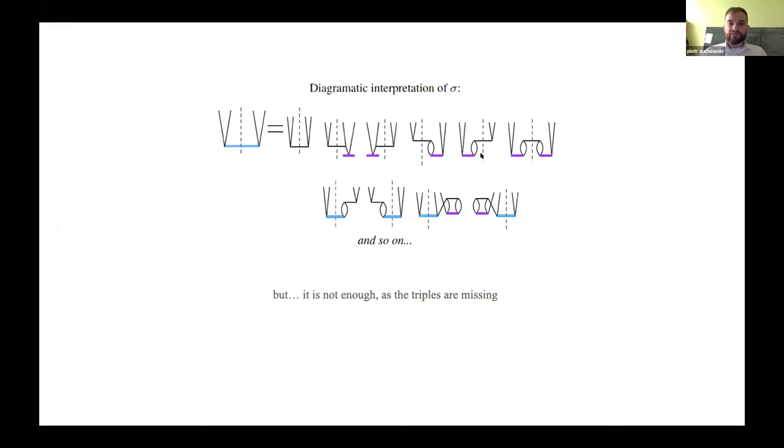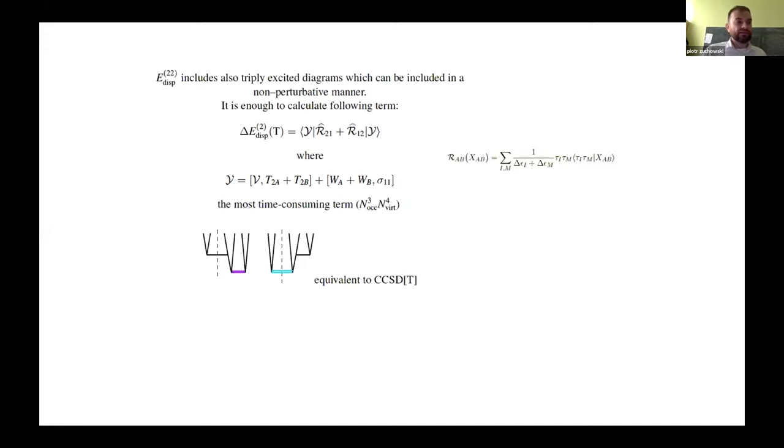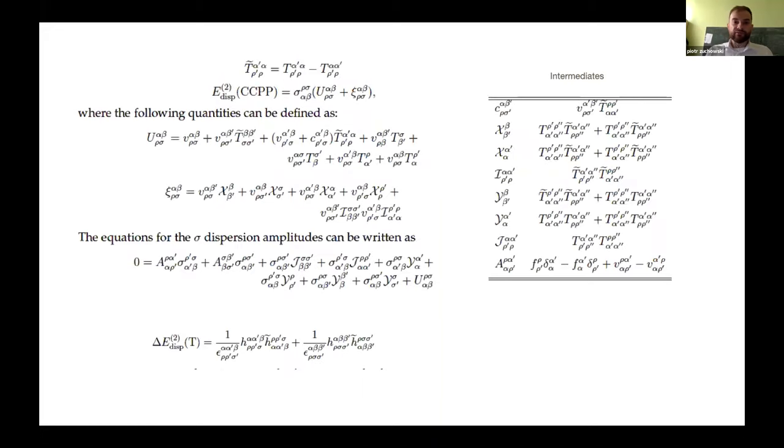But here, actually, we're still missing triples. So, basically, we need to add manually, in the spirit of CCSD(T). We have to add manually some more terms. And these terms are basically presented here. So, from the perturbation analysis, one can derive that this missing expression, which warrants the accuracy up to second order of intramonomer correlation, is the following. So, basically, this term roughly corresponds to that kind of diagrams. And this is the most time-consuming term. Of course, we have orbital expressions here.